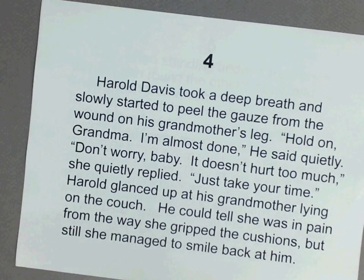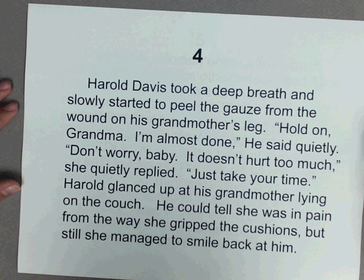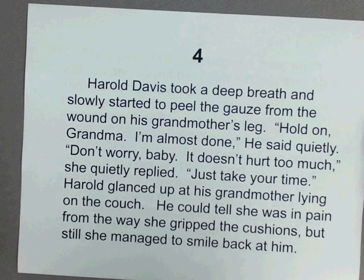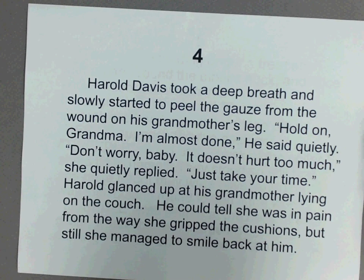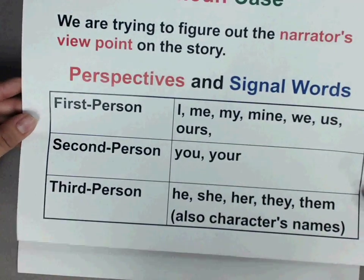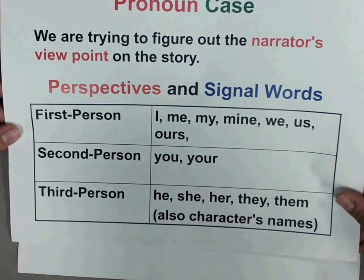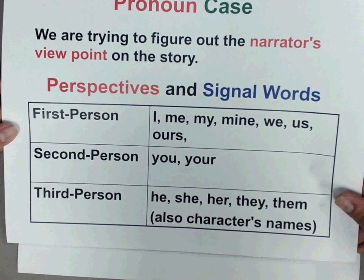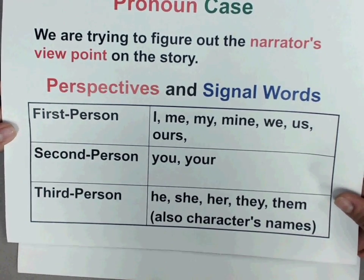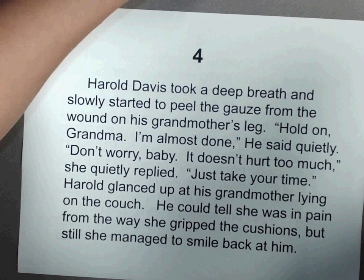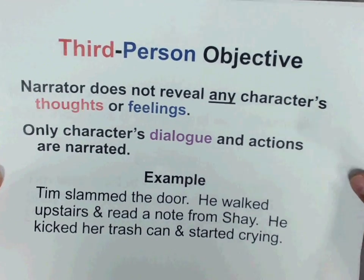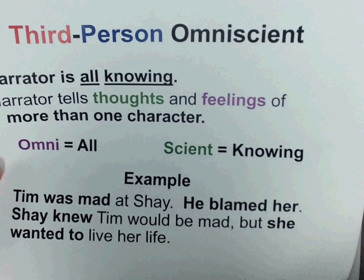You're going to do four and five by yourself. Number four: "Harold Davis took a deep breath and slowly started to peel the gauze from the wound on his grandmother's leg. 'Hold on, Grandma. I'm almost done,' he said quietly. 'Don't worry, baby. It doesn't hurt too much,' she quietly replied. 'Just take your time.' Harold glanced up at his grandmother lying on the couch. He could tell she was in pain from the way she gripped the cushion, but still she managed to smile back at him." First, check your pronouns. Decide if it's first, second, or third person. If it's third person, you need to decide: is it objective, limited, or omniscient?